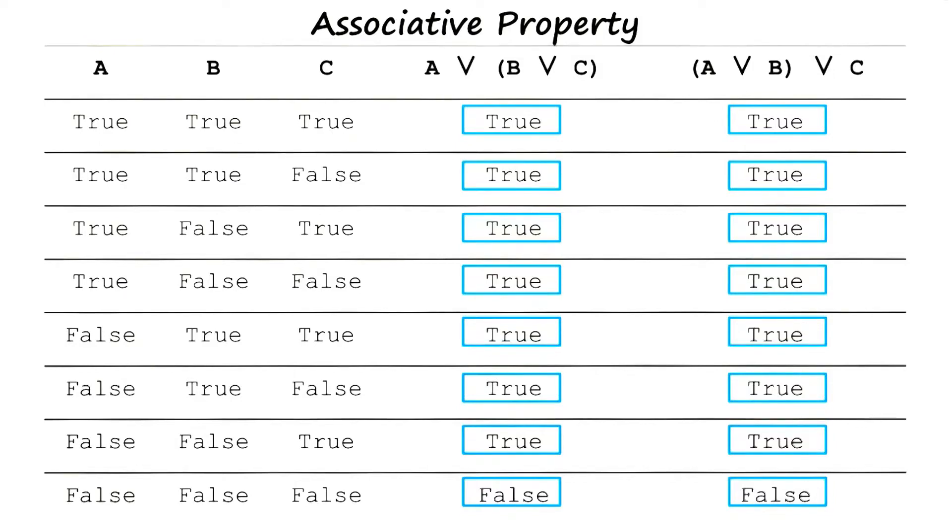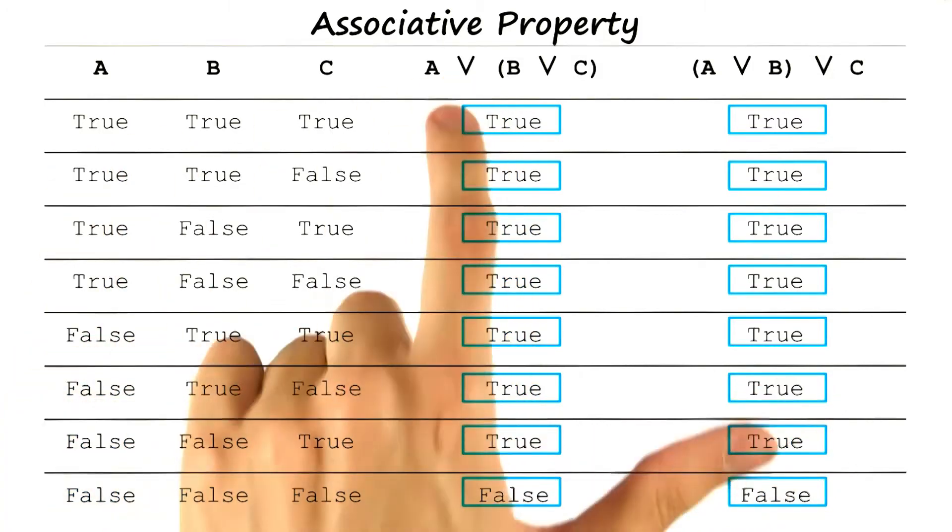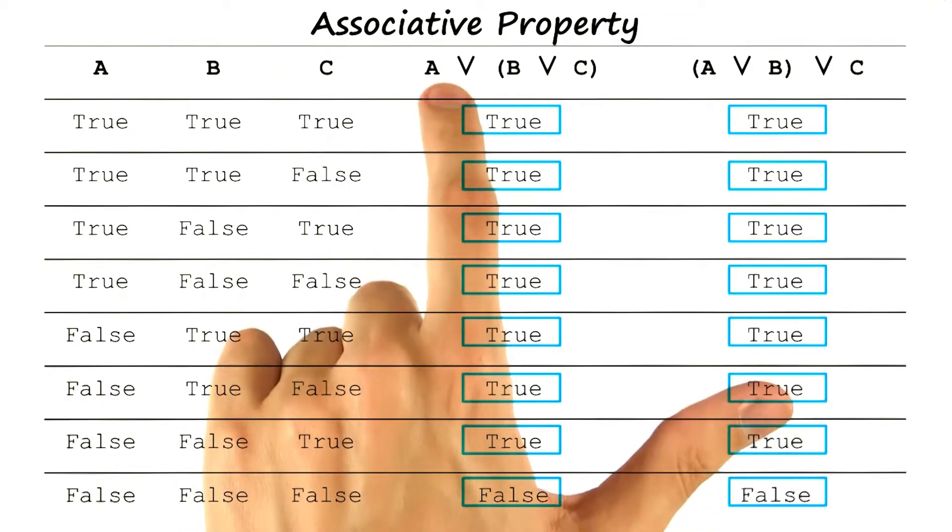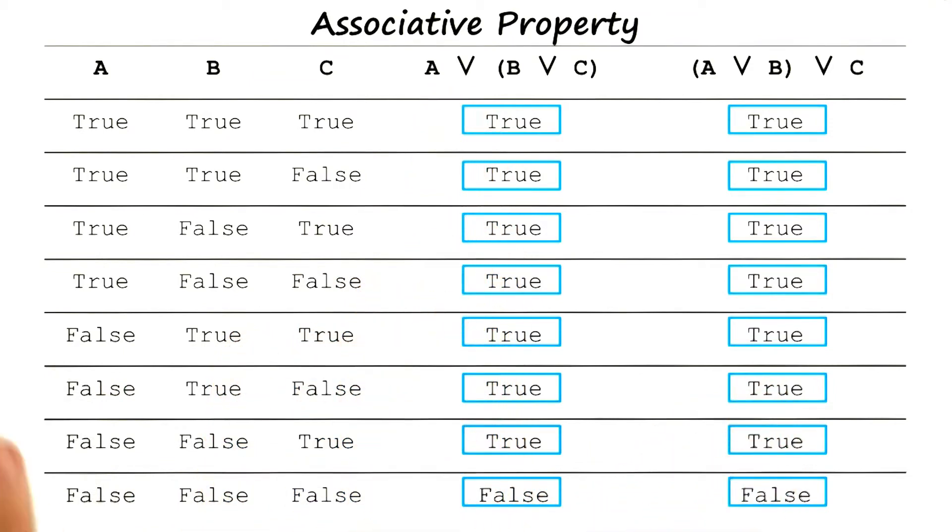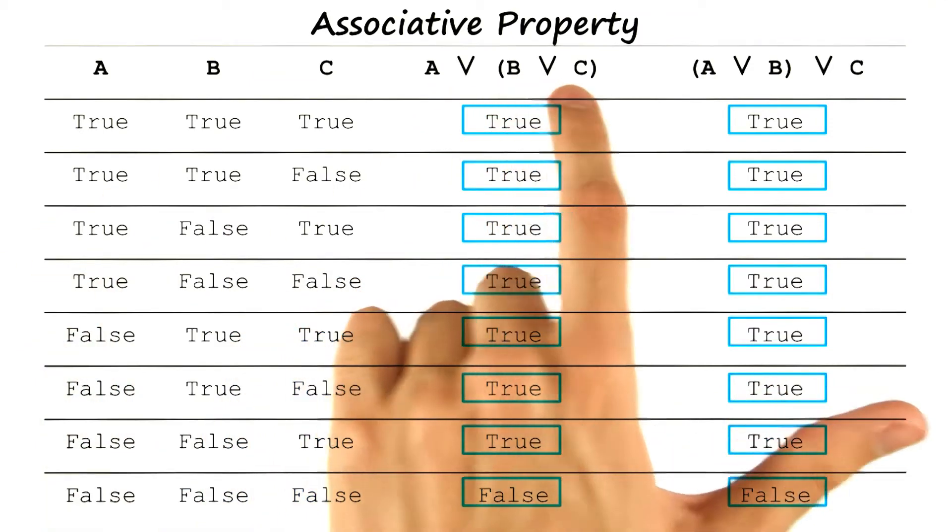What did you do there, David? So like before, because this is an or, as soon as we see that A is true, we can go ahead and write down true for all of these. When A is false, we just need to evaluate B or C.